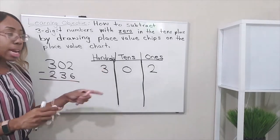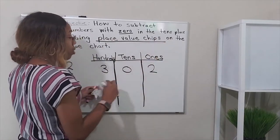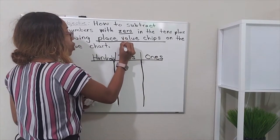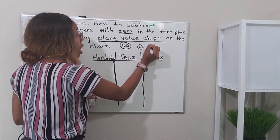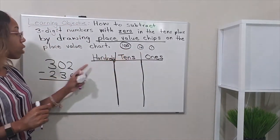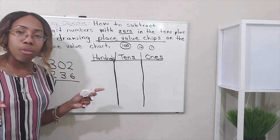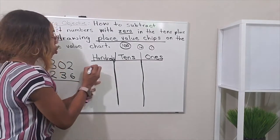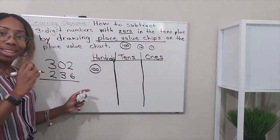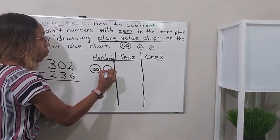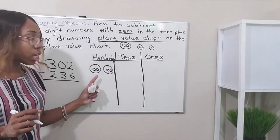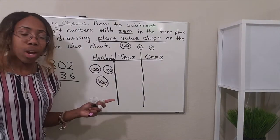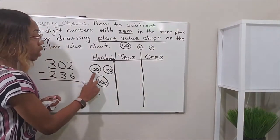Now, do we write numbers for the place value chips? No. Remember, place value chips are hundreds, tens, and ones — little cookies. So they look like a circle with 100, a circle with 10, and a circle with 1. So we have 300, and since we have 300, we're going to draw three 100-chips: 100, 100, 100. That equals 300.